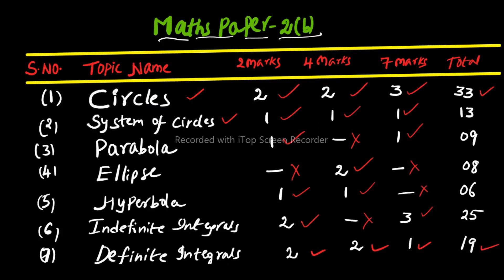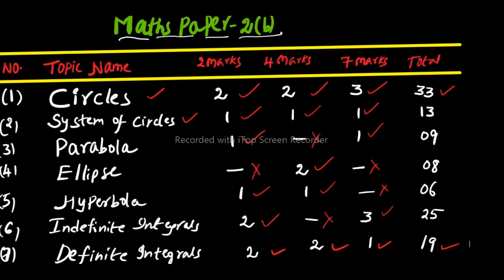All 4 papers — 1A, 1B, 2A, and 2B — have been discussed chapter-wise and marks-wise from the undeleted 70% syllabus. In another video I covered what is deleted from 1A, 1B, 2A, and 2B — please watch that video; the link is in the description below or click the I button. I hope you followed this video well. Please like, share, and subscribe if you haven't yet. I'll see you in the next video. Take care, bye bye.